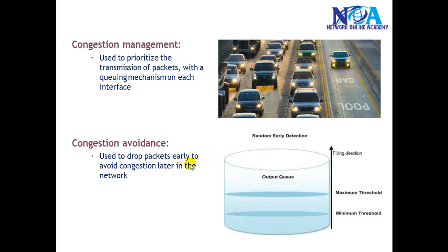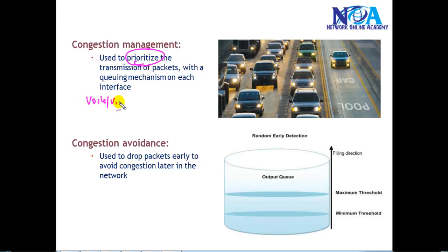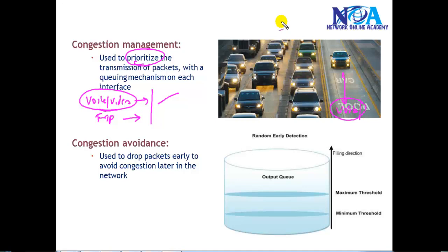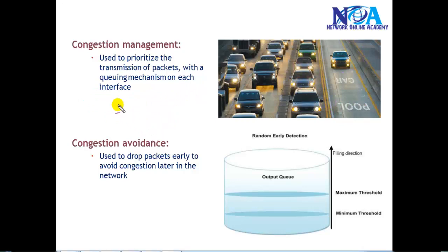The next mechanism is congestion management. In congestion management we define a priority for specific types of traffic. For example, if voice, video, and FTP traffic are all coming in and there is major congestion, we want to ensure that voice and video traffic is always sent first before FTP traffic. We can arrange them in separate queues to ensure voice and video traffic is always given high priority and has very little chance of being dropped. We have different queuing mechanisms — class-based weighted fair queuing and low latency queuing among others.